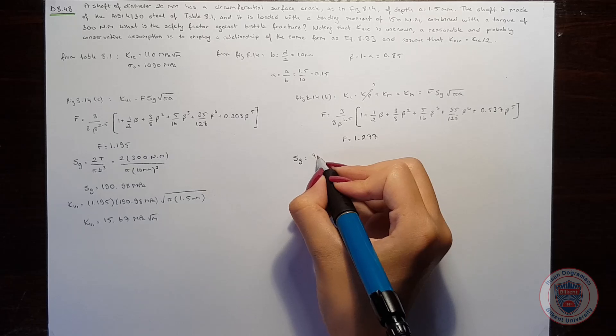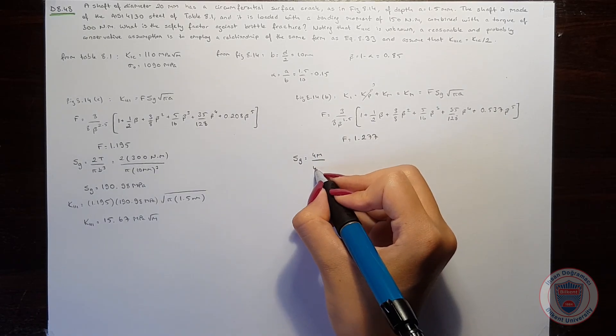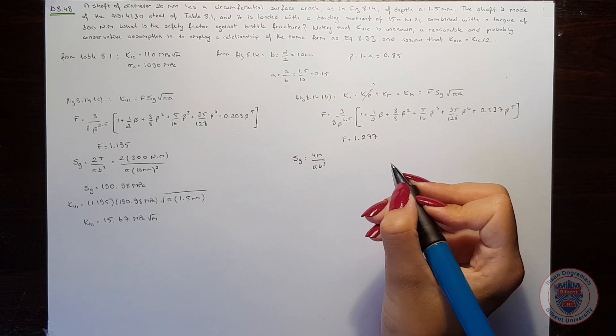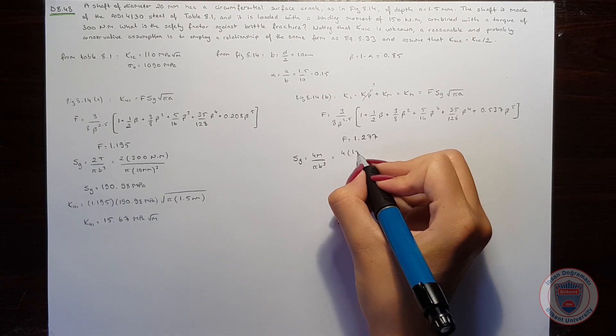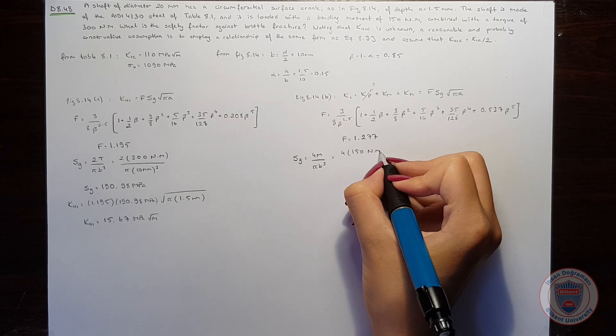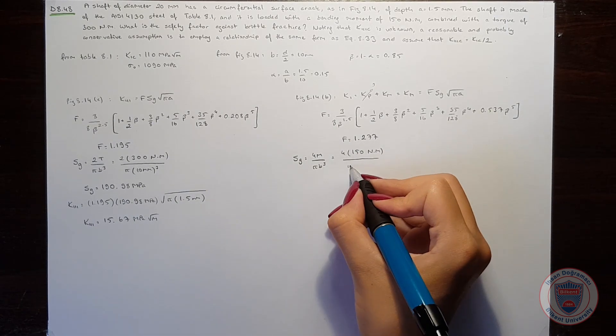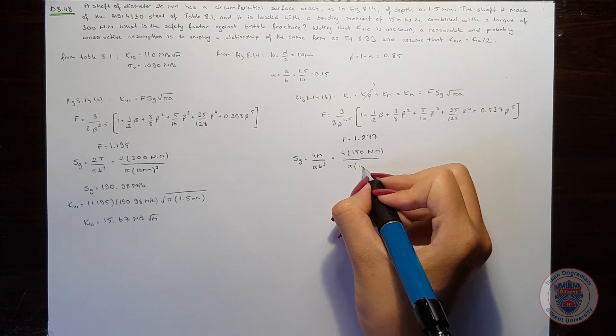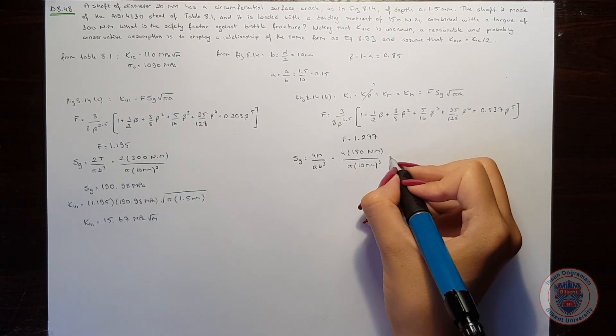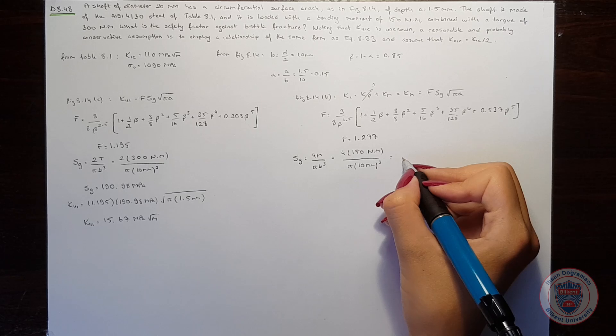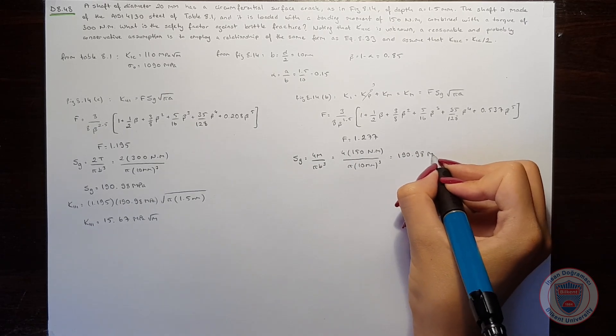Sg in this case equals 4M over pi B cubed. This equals 4 times 150 Nm over pi times 10 mm cubed, giving us Sg equals 190.98 MPa again.